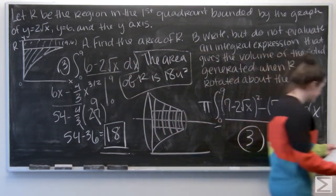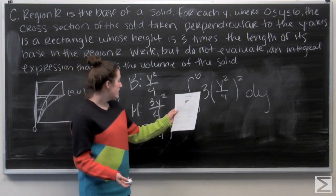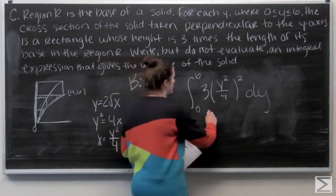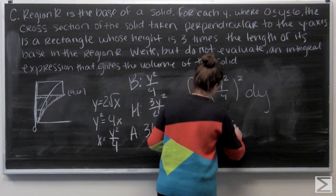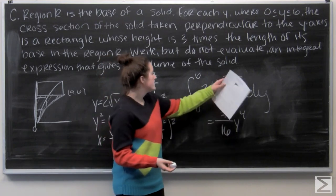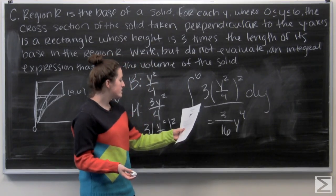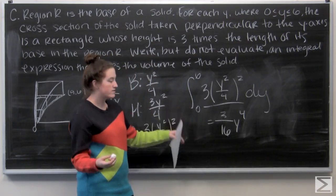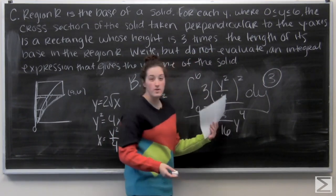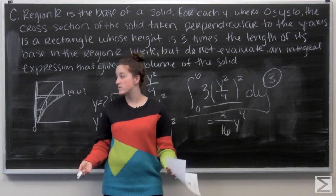For Part C, 2 points are awarded for the integrand. The answer key shows 3/16 y to the 4th, which is equivalent since (y²/4)² equals y⁴/16. Then 1 more point for the complete integral expression — all points earned. So full marks on every part. Hopefully this gives you a better idea of how to work through a free response question on the AP Calc exam.